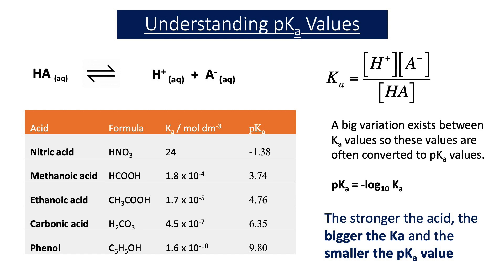In this video we're going to introduce a new dissociation constant, Kw, which is called the ionic product of water. We can use Kw to work out the pH of water at different temperatures, and also the pH of strong alkalis.